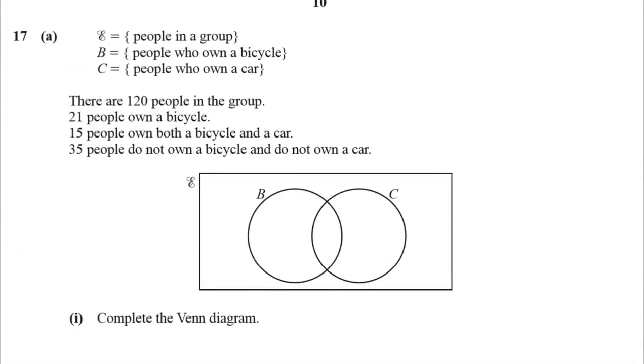Question 17. We have the universal set. That's what that funny little symbol means. B is the people who own a bicycle. C is the people who own a car. And there are 120 people in the group. So the universal set has 120. 21 people own a bicycle. 15 people own both a bicycle and a car. Well, we know where that goes because there's only one spot. 15 goes there. And 35 people do not own a bicycle and do not own a car. So 35 has to be out there.